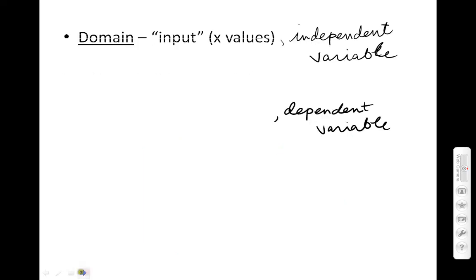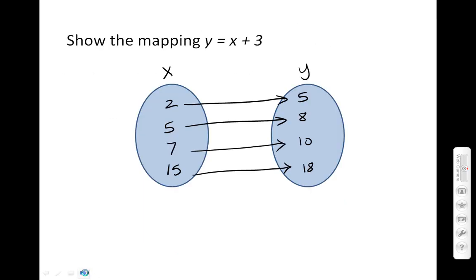The example where we had y equals x plus 3. 2 and 5 were the only two domain and range values paired together. 5 and 8 were the only domain and range values paired together. 7 and 10, 15 and 18 were the only ones paired. So again, this is considered a one-to-one mapping.